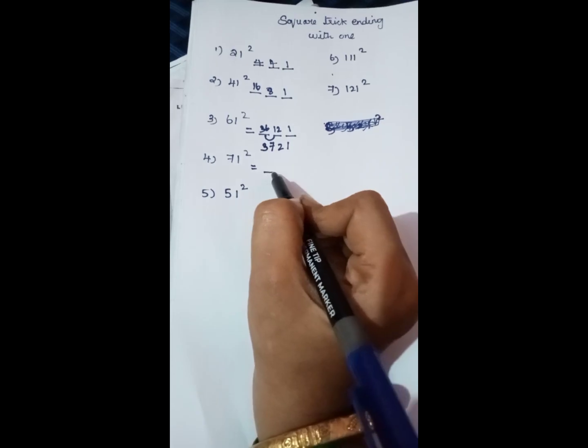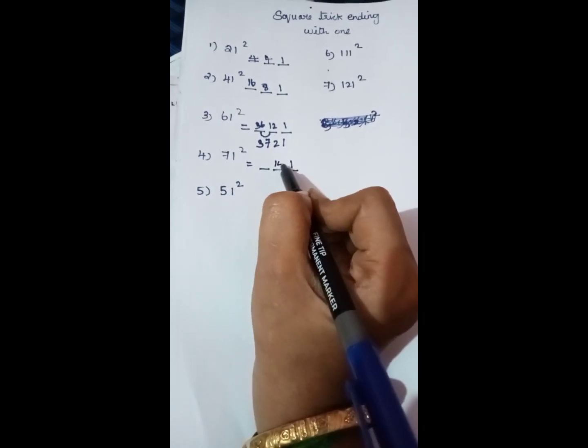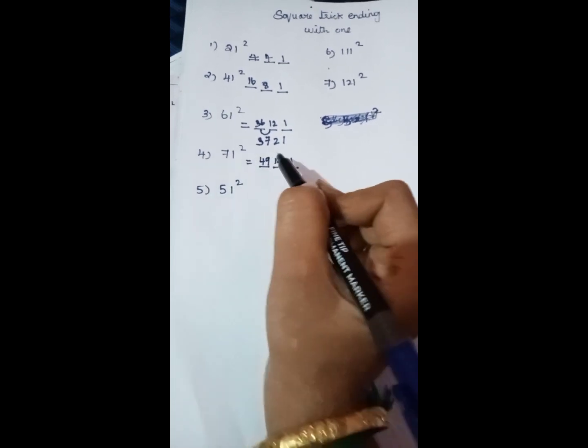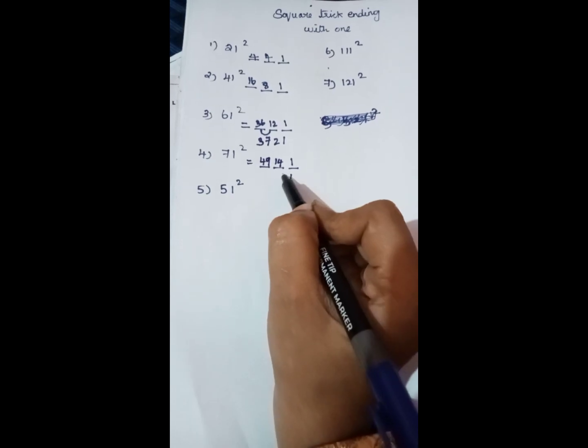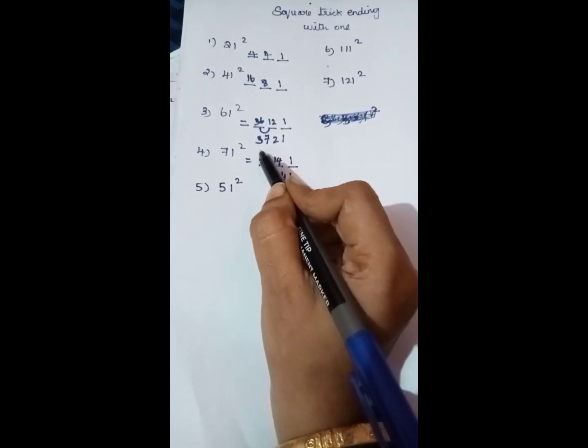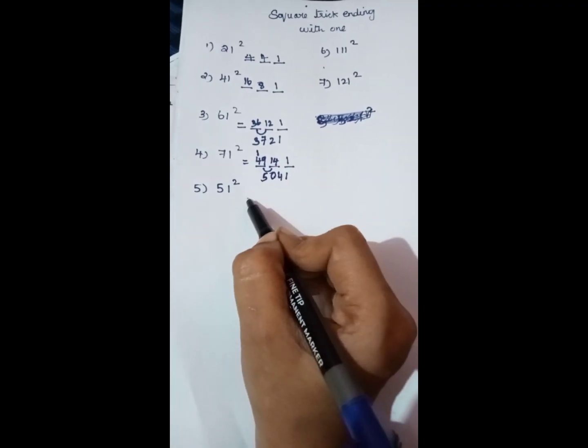So 1 square, write as it is 1, then double the 7 to get 14, and 7 square is 49. Do the chain addition: 1, 4+1=5, 0 carry 1 to 4, that is 5, so 5041.